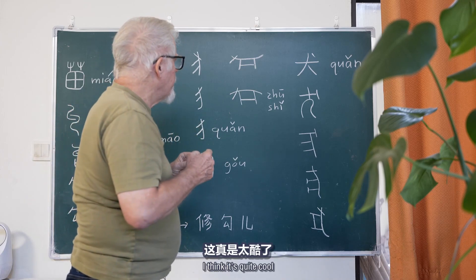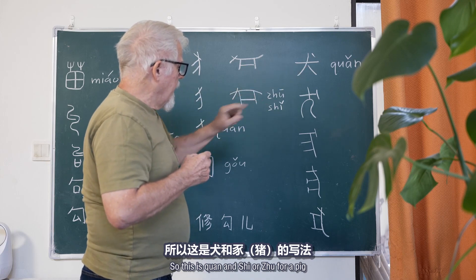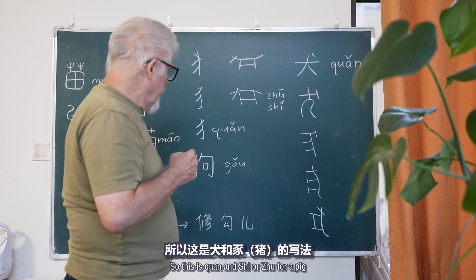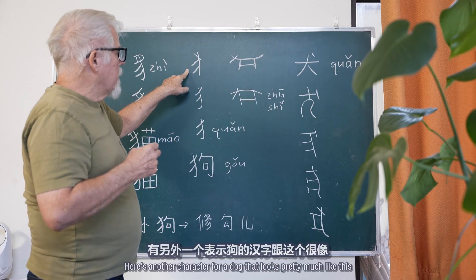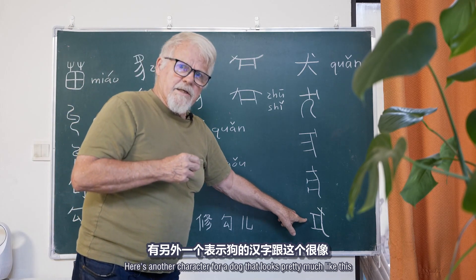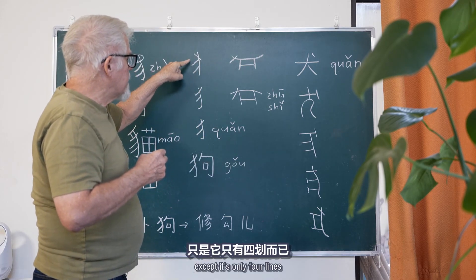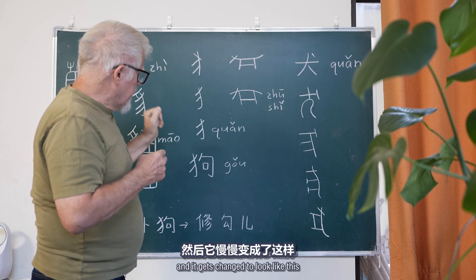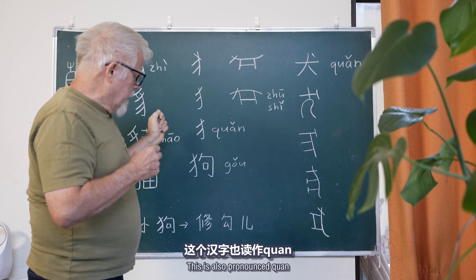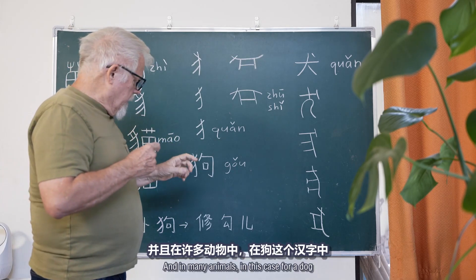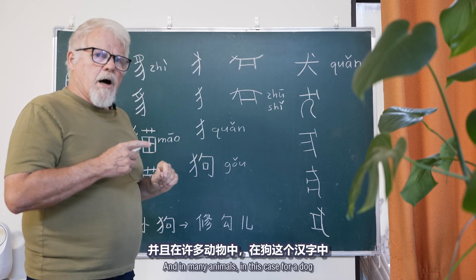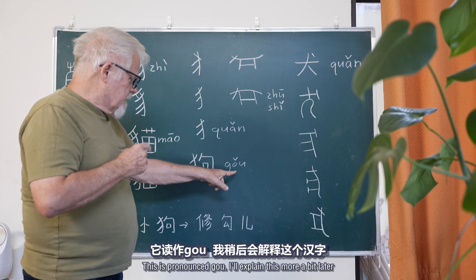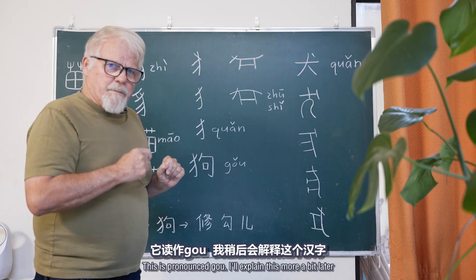I think it's quite cool. So this is quǎn and shǐ, or jiù, for pig. Now, let's look at this character here — here's another character for dog. It looks pretty much like this, except it's only four lines, but you can still see the mouth and the ear. And it gets changed to look like this — this is also pronounced quǎn. In many animals, in this case for a dog, this part indicates that it's a dog, and this is the pronunciation part. This is pronounced gǒu. I'll explain this more a bit later.